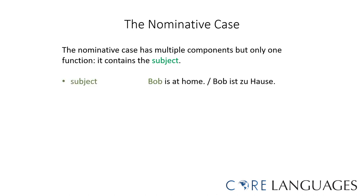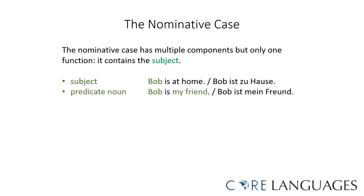The nominative case has multiple components but only one function: it contains the subject of the sentence. For example, "Bob is at home" — Bob ist zu Hause. Bob is the subject of the sentence; Bob is in the nominative case. The nominative can also include the predicate noun. For example, "Bob is my friend" — Bob ist mein Freund. This sentence includes Bob and another noun, mein Freund, which describes the subject. Bob is still in the nominative case, and so is the predicate noun.